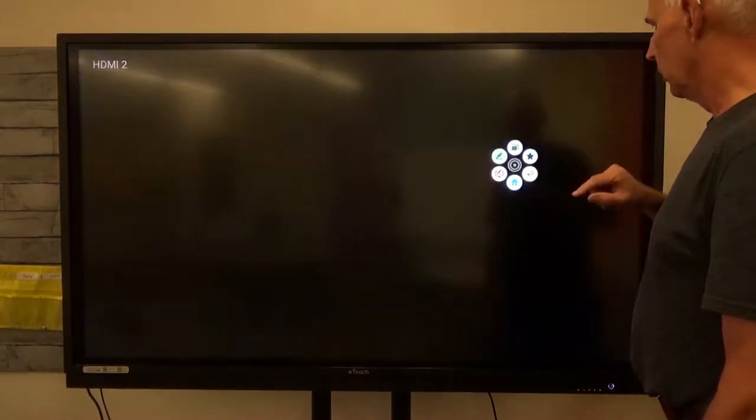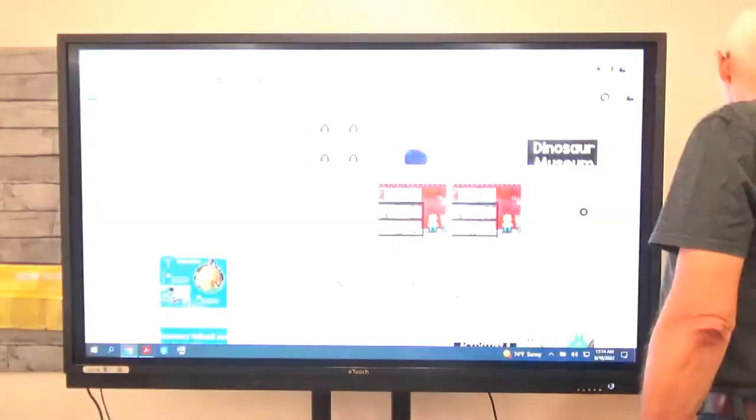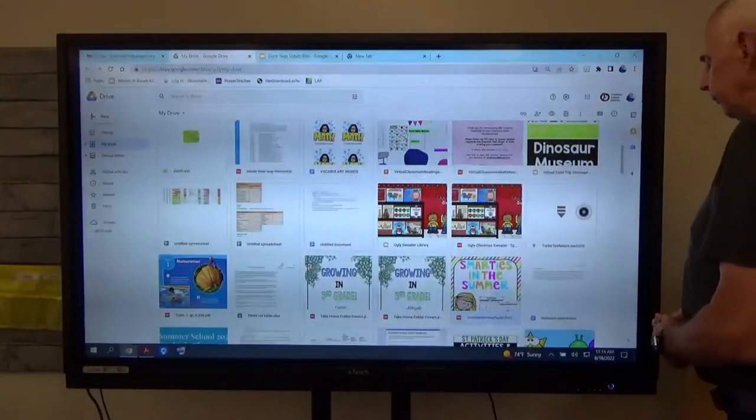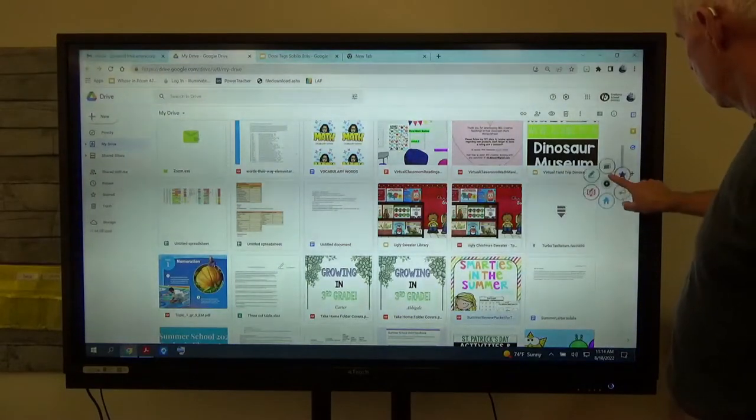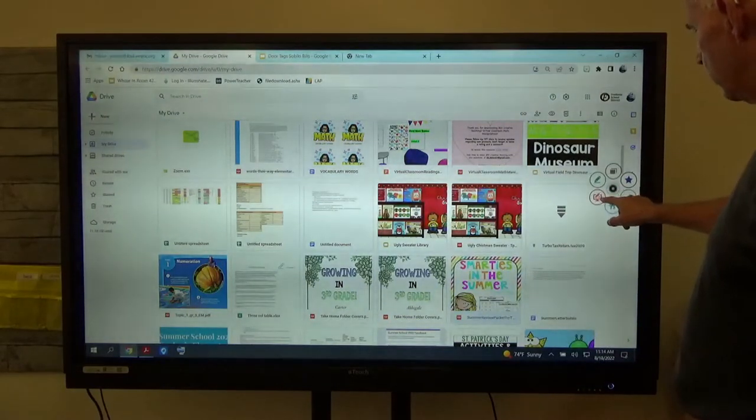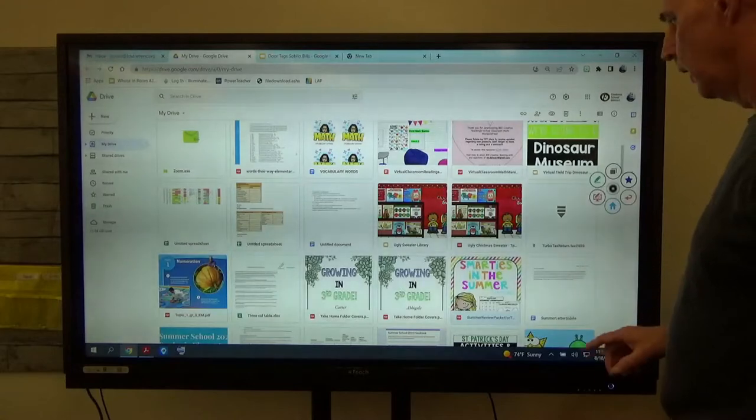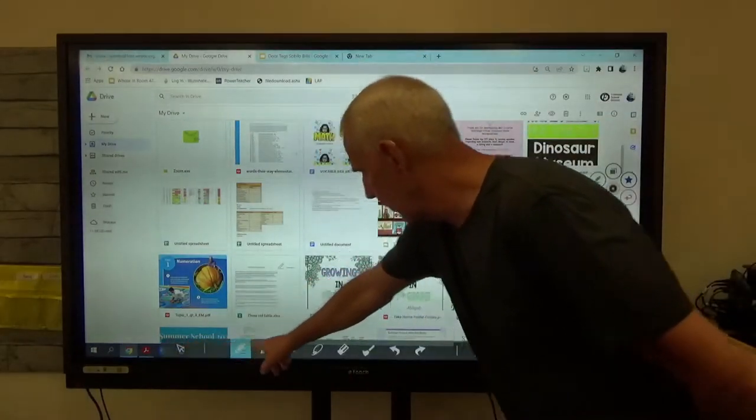But now what I'm going to do is look back at my computer and we're going to write on the screen. To write on the screen, I'm going to touch this pink one that has a screen with a marker on it. We're going to see this menu come across the bottom.